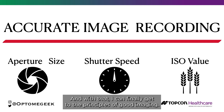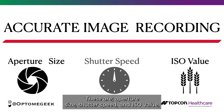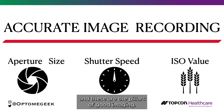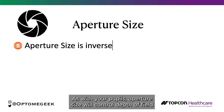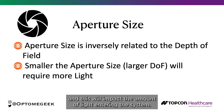And with that, I can finally get to the principles of good imaging. These are aperture size, shutter speed, and ISO value — and these are the pillars of good imaging. As with your pupils, aperture size will control depth of field, and this will impact the amount of light entering the system.